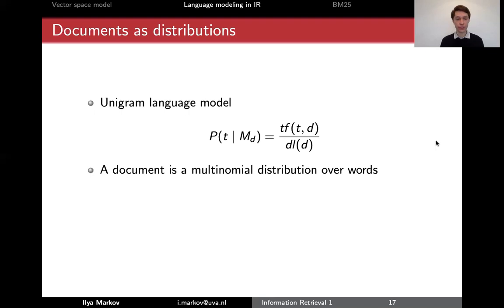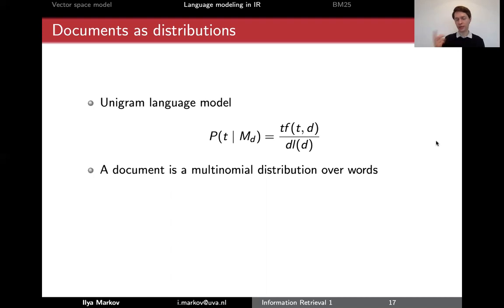This gives us a multinomial distribution over words. In a binomial distribution you toss a coin and get either head or tail. In a multinomial distribution you have many different outcomes of an experiment — not just two outcomes like tail and head, but as many outcomes as there are words in the vocabulary.